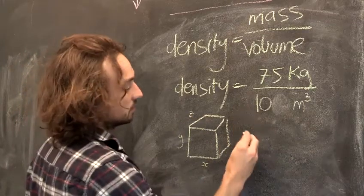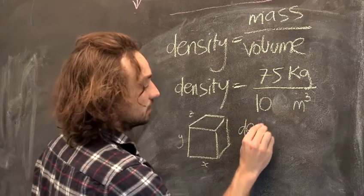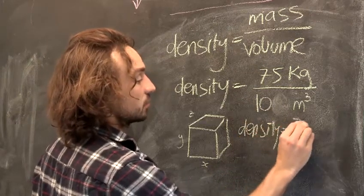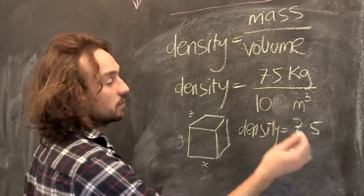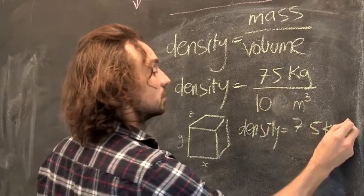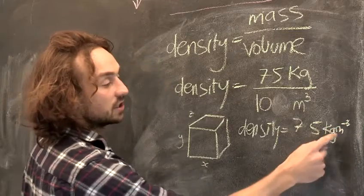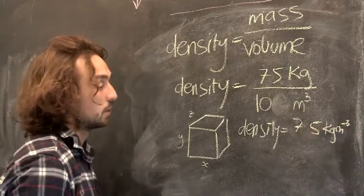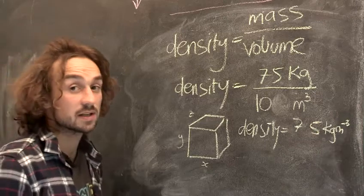That's how you write that. Kgm to the minus 3. Now, if you're trying to find a volume of something slightly more regular, let's say a cube or a cuboid,